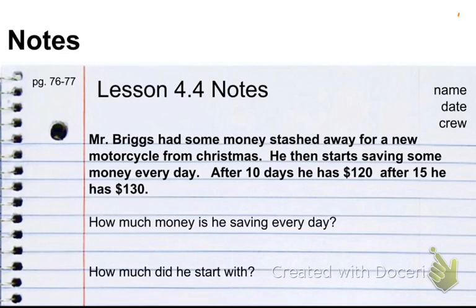Alright, here is the problem. Mr. Briggs has some money stashed away for a new motorcycle from Christmas. I got a whole bunch of Christmas money, I put it in a peanut butter jar, I'm saving it. But then I start saving some of my money every day. Every day I put some money in that jar. It's the same amount of money every day. After 10 days I have $120. After 15 days I have $130.